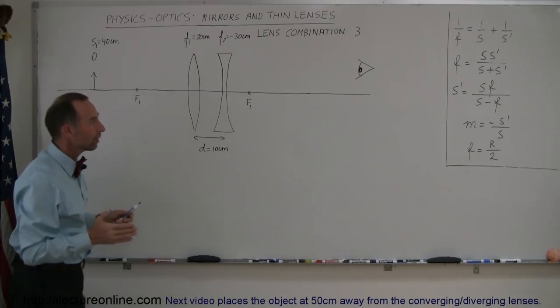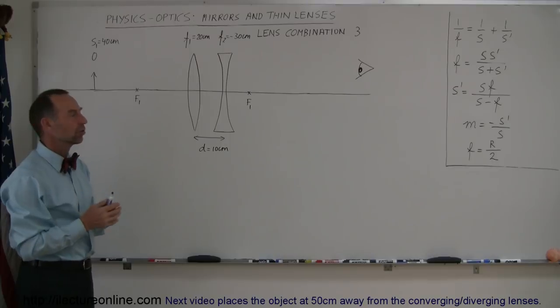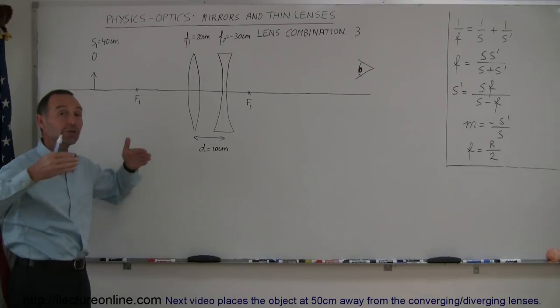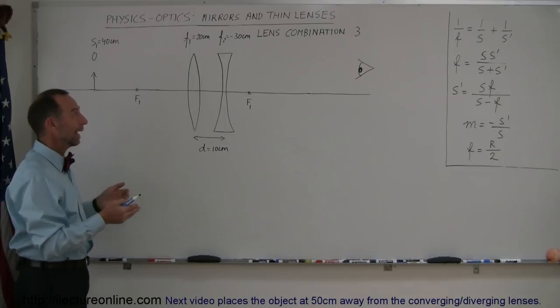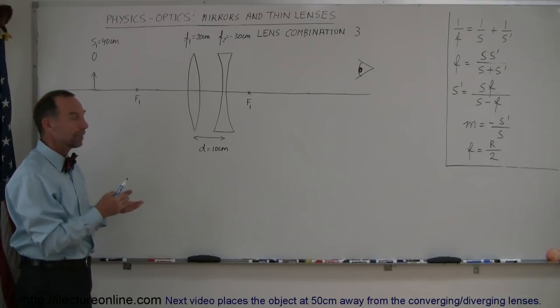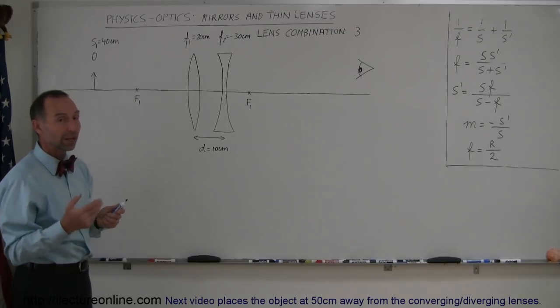Now when you put a converging and diverging lens together, they kind of counteract each other because the converging lens causes rays to converge and the diverging lens causes the rays to diverge. As a combination, will they act like a converging lens or a diverging lens? That depends upon their relative strengths.